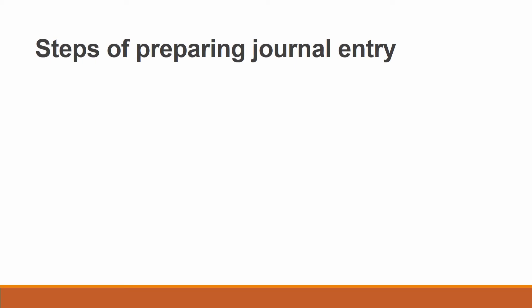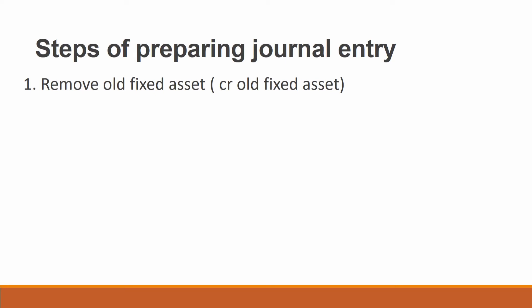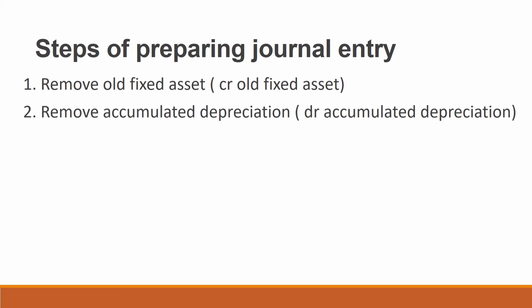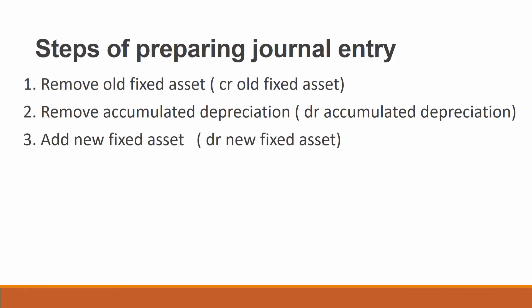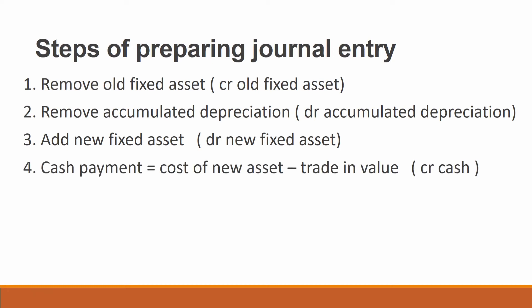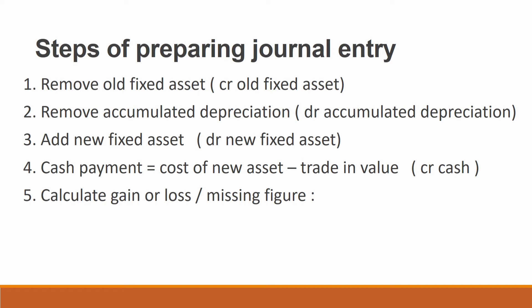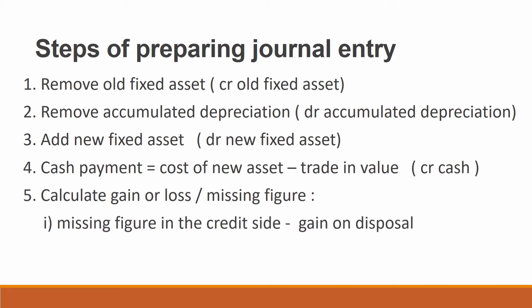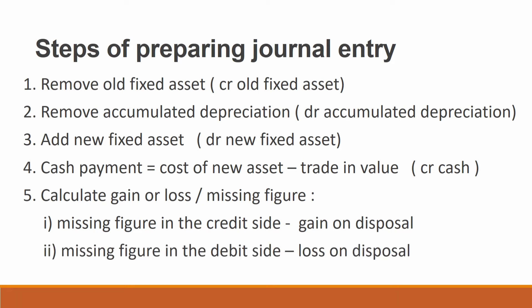There are several steps for preparing the journal entry. Step 1: remove the old fixed asset — credit old fixed asset. Step 2: remove accumulated depreciation of the old fixed asset — debit accumulated depreciation. Step 4: cash payment — the formula is cost of new asset less trade-in value, credited as cash. Step 5: calculate the gain or loss as the missing figure. If the missing figure is on the credit side, we get a gain on disposal; if it is on the debit side, we get a loss on disposal.